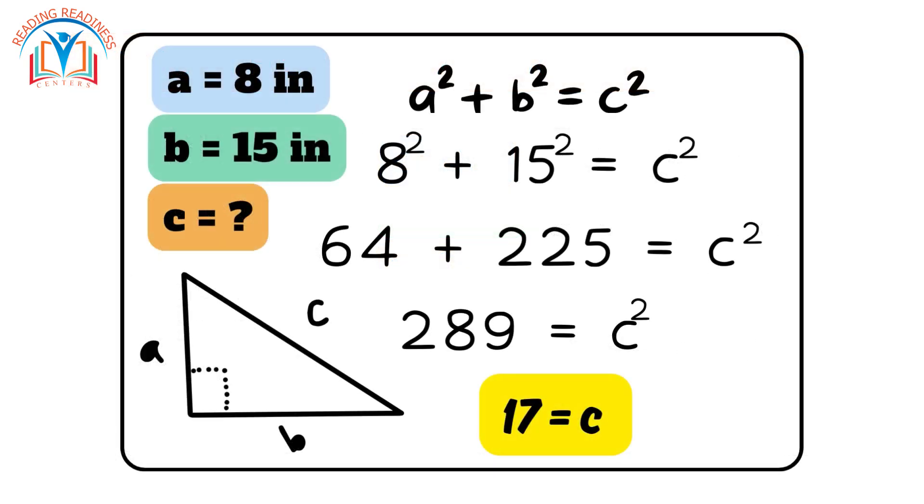Substitute your lengths into the Pythagorean theorem equation and solve for the missing value. For instance, let's suppose we encounter a triangle with legs measuring 8 units and 15 units. By employing Pythagoras Theorem, we unveil the hypotenuse to be 17 units long. Truly enchanting, isn't it?